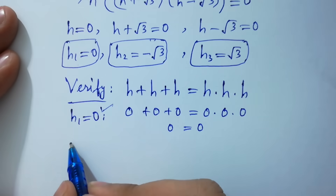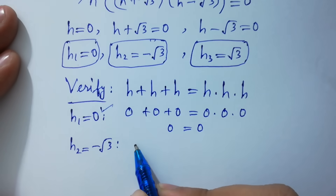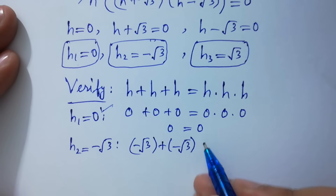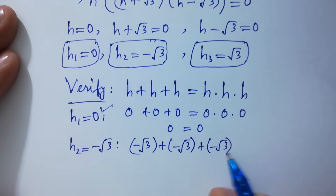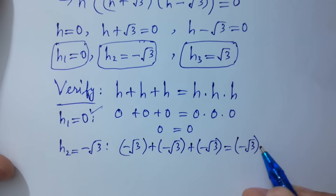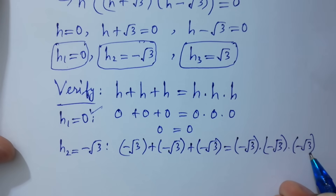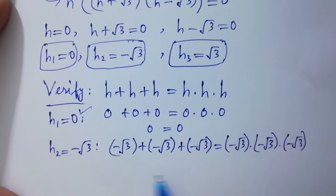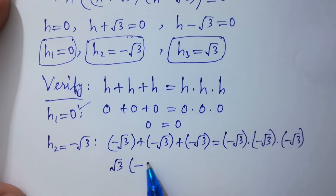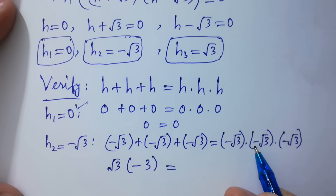If we put h₂ equal to minus square root of 3, we have minus square root of 3 plus minus square root of 3 plus minus square root of 3 equal to minus square root of 3 times minus square root of 3 times minus square root of 3. Factoring out square root of 3, we get minus 1 minus 1 minus 1, giving minus 3 on the left side.